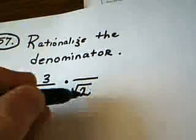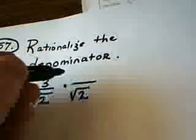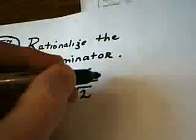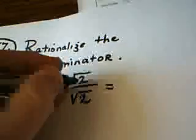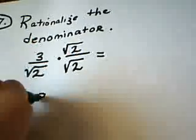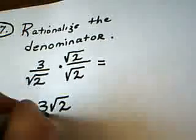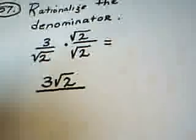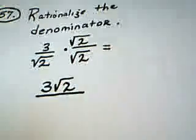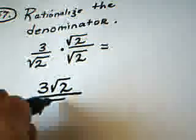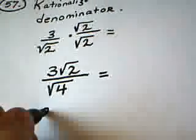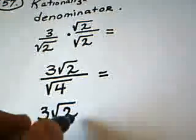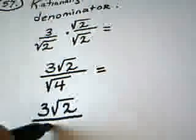Of course, whatever I do downstairs to keep it equivalent, I also have to do upstairs. So in the numerator I have 3 times the square root of 2, which is 3 radical 2. In the denominator I have the square root of 2 times the square root of 2, which is the square root of 4. There's nothing to simplify up top — it remains as 3 radical 2. But on the bottom, the square root of 4 becomes 2.